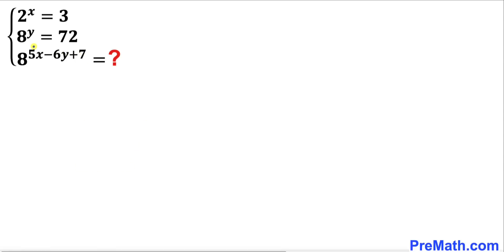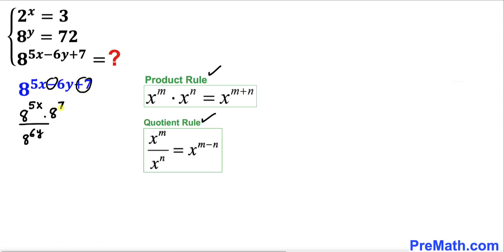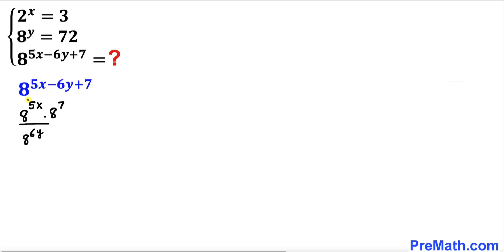Here's the very first thing we are going to do. Let me copy down this expression. Now let's recall the product rule as well as the quotient rule of exponents — we are going to apply them here. So 8^(5x - 6y + 7) can be written as 8^(5x) in the numerator, with 8^(6y) in the denominator, times 8^7 also in the numerator.